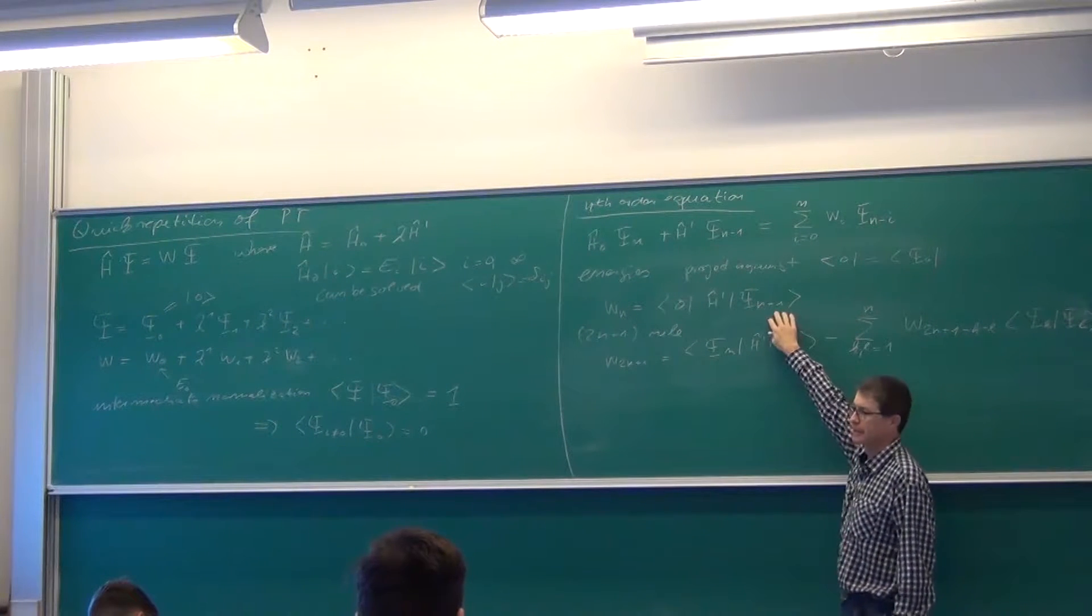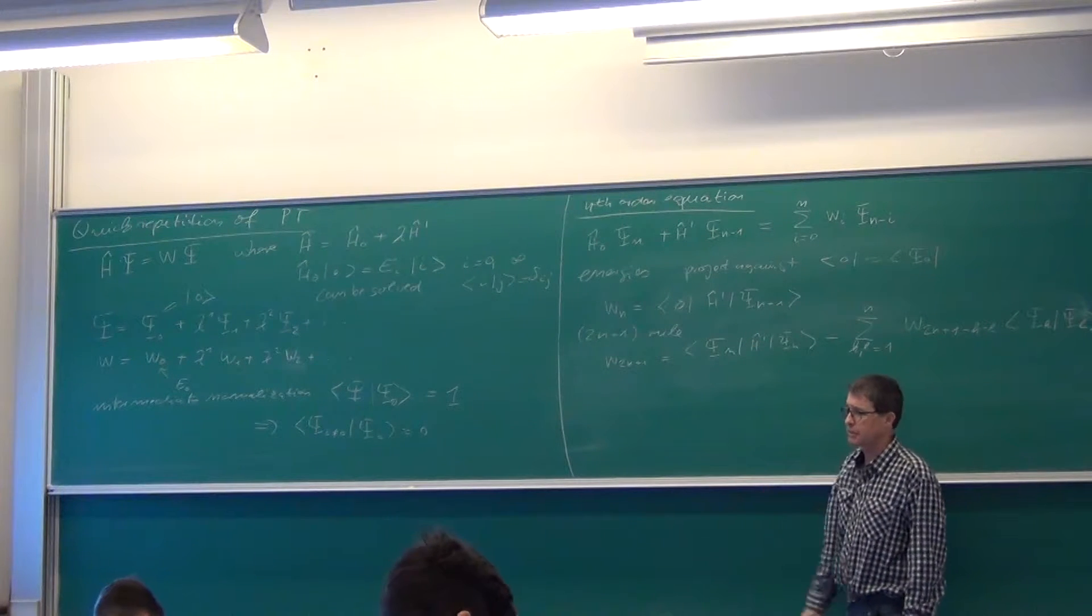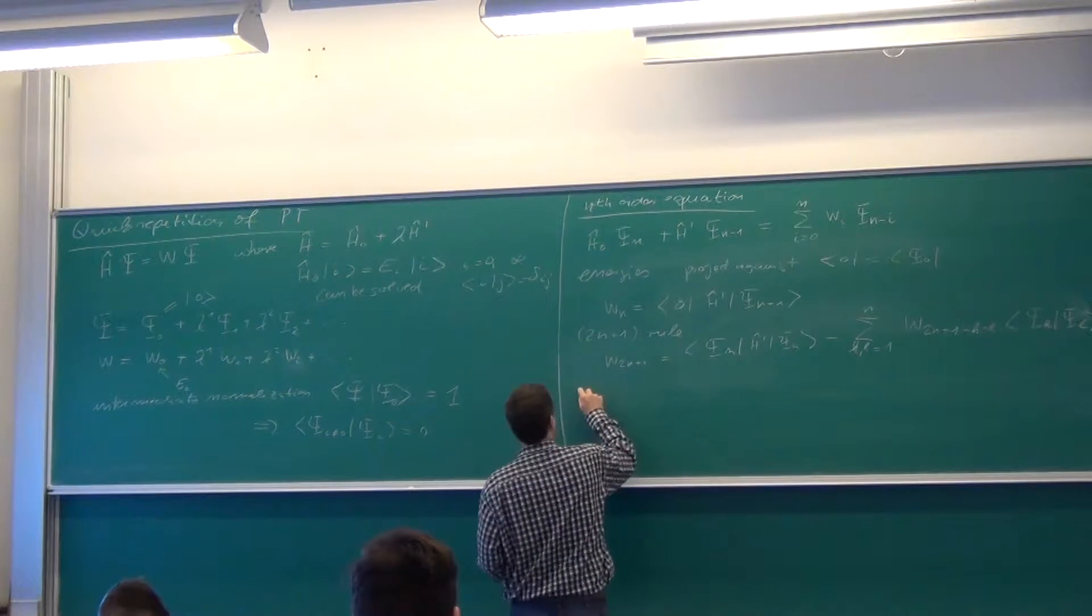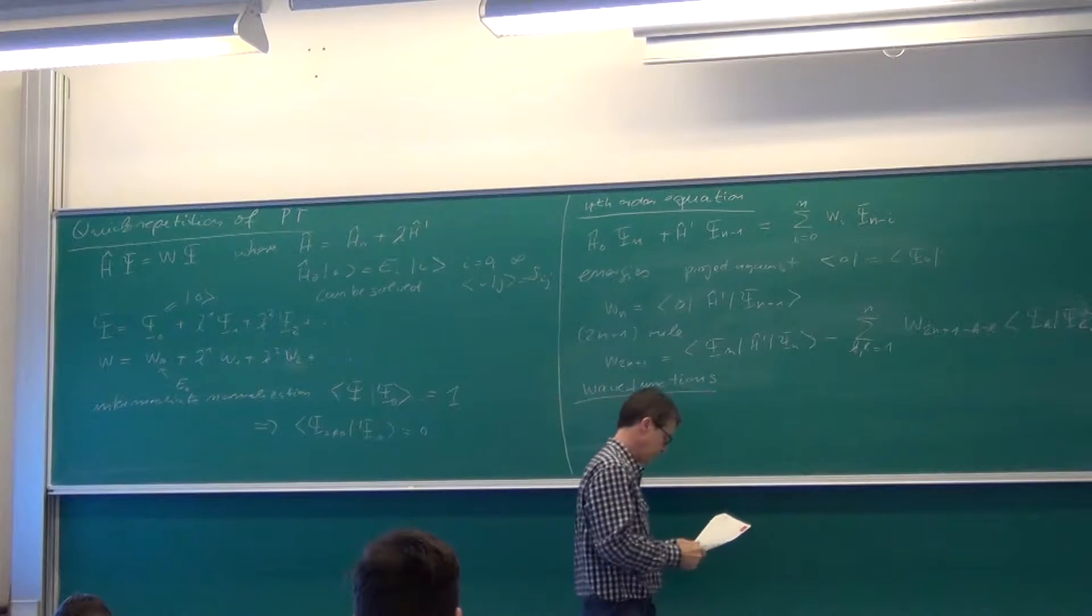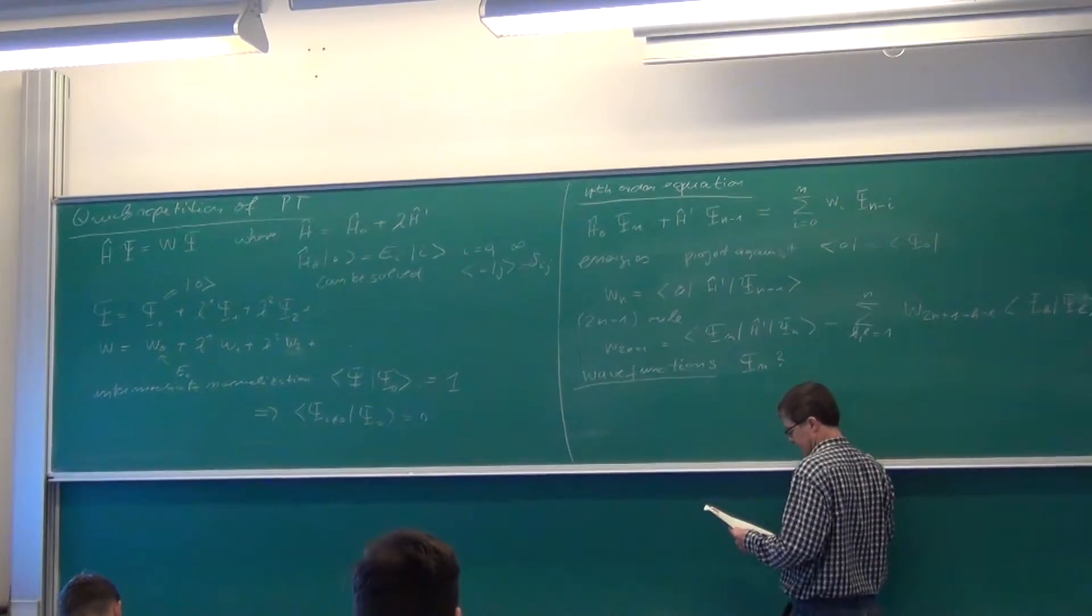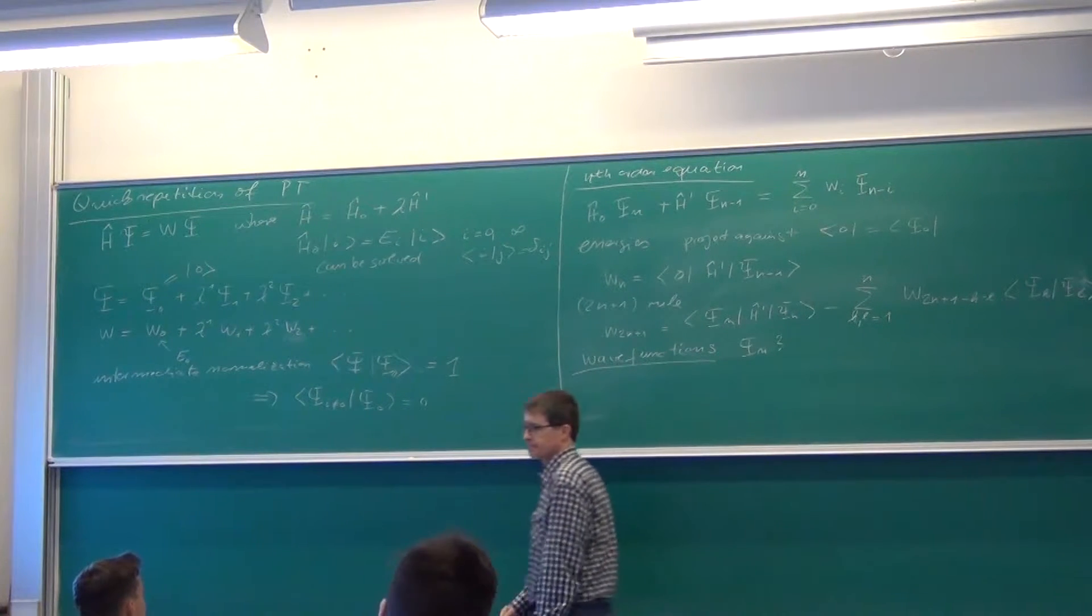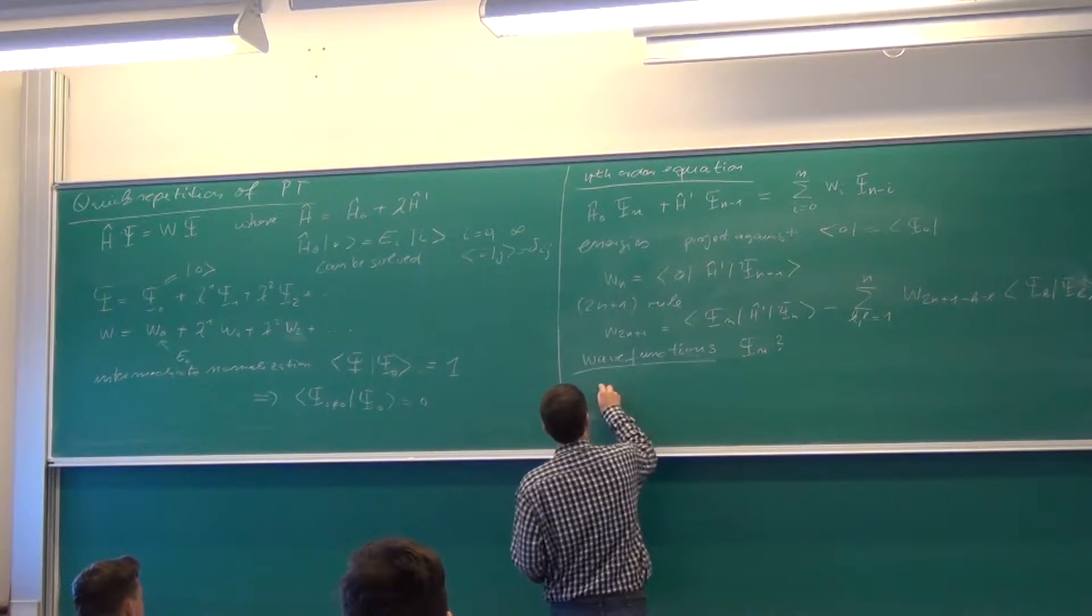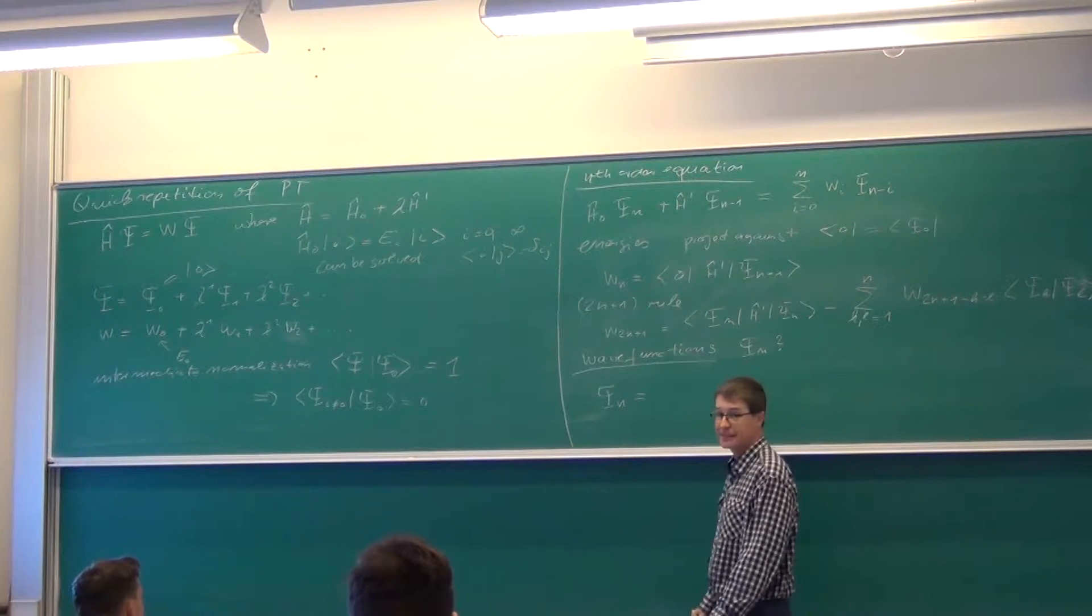Well, that leads us, this as well as the original one, leads us to the question, how do we get the nth-order correction to the wave function? How do we get those? You can use the ones we already have. We have a complete set. Precisely. We expand them in a complete set, like we did last week.